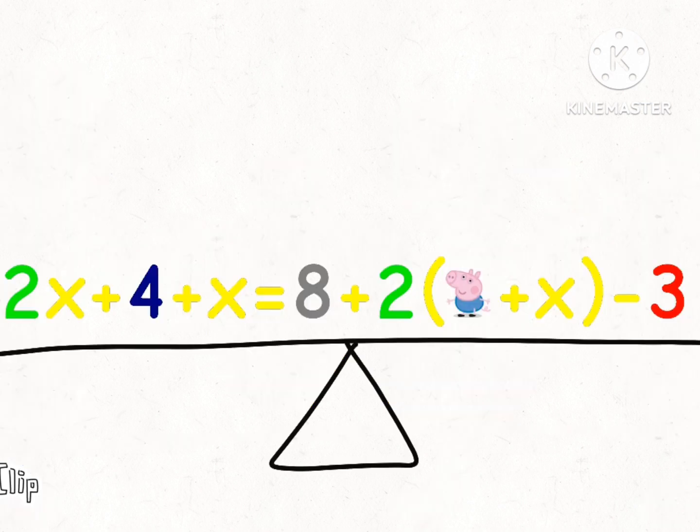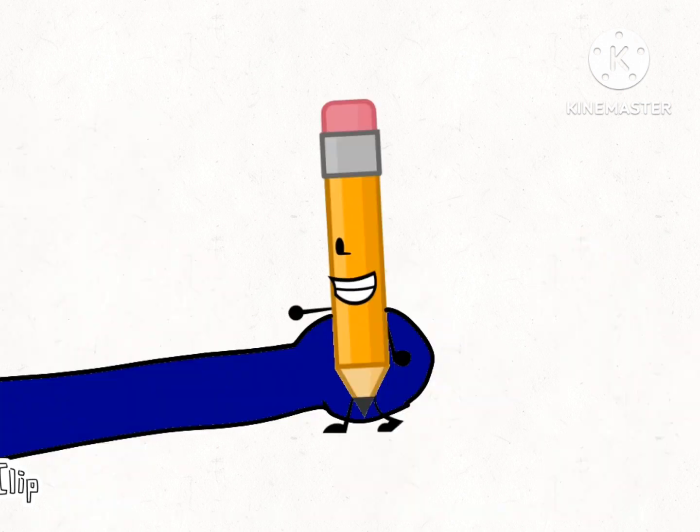But Thor, there are too many numbers. We'll never figure it out. Yeah, we can. If we do it step by step, then use a pencil.